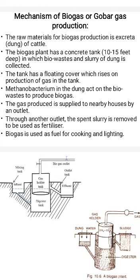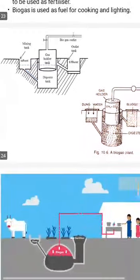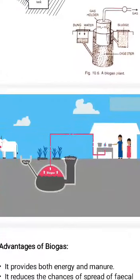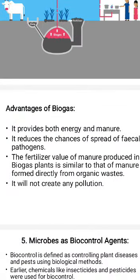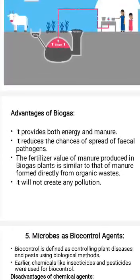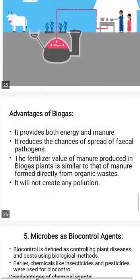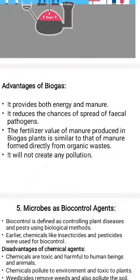After biogas production, the outlet substance is highly fertile manure used as a fertilizer. The advantages of biogas are: it is eco-friendly, it provides both energy and manure, it reduces the chance of fecal pathogens, and the manure produced after biogas production is more fertile than normal cow dung used directly for cultivation. It also creates no pollution.